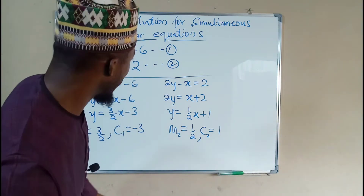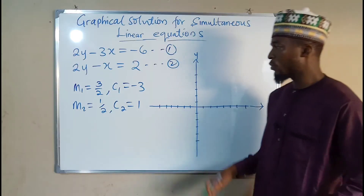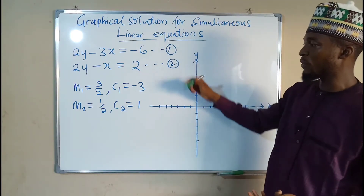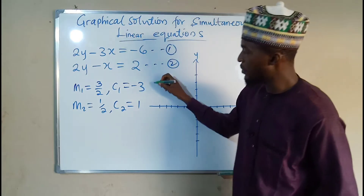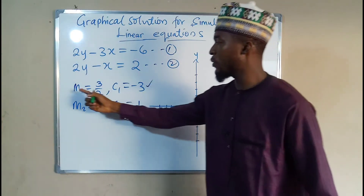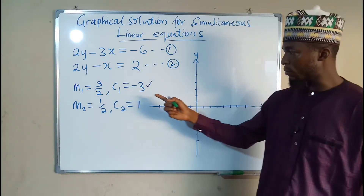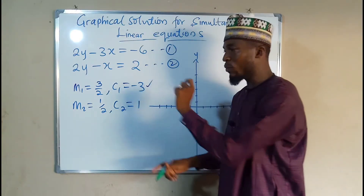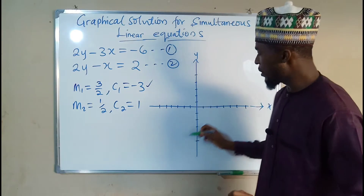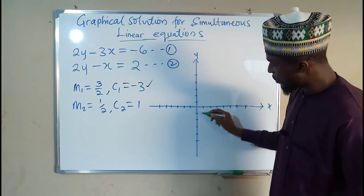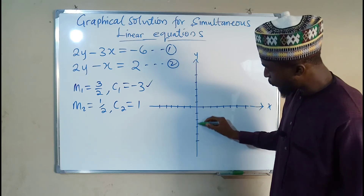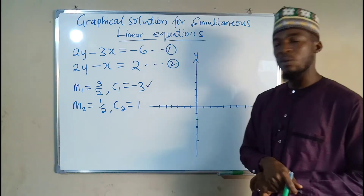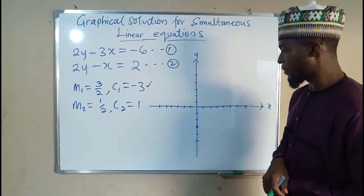So now let us graph them. Here is our y and x plane where we are going to plot the two graphs. For the first graph, we need the slope and the intercept. We are going to locate the y-intercept first, which is negative 3. On the y-axis we have negative 1, negative 2, and negative 3 — this is our y-intercept.